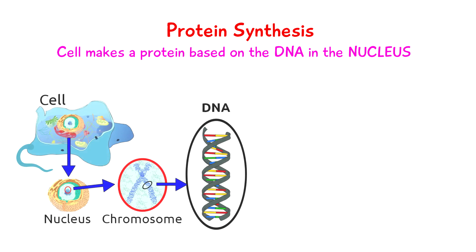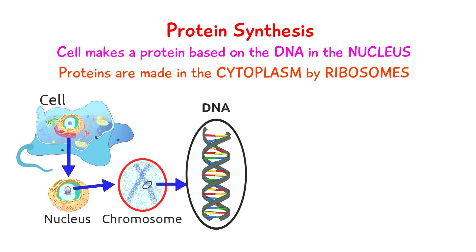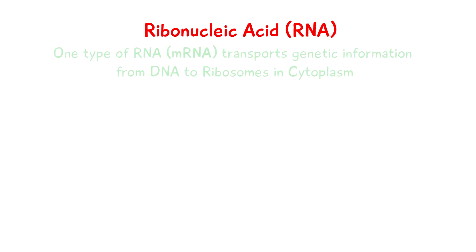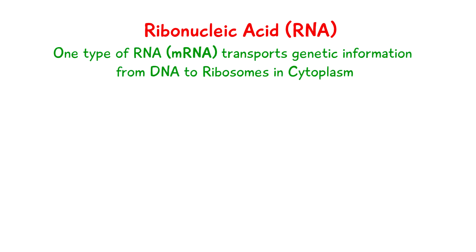DNA is located inside the nucleus of a cell, and proteins are made in the cytoplasm by ribosomes. So we need to relay the information from the DNA to the ribosomes in the cytoplasm to ensure the right protein is made according to the DNA. This is where RNA is involved — one of the functions of RNA is to carry messages from DNA in the nucleus to the ribosomes in the cytoplasm.